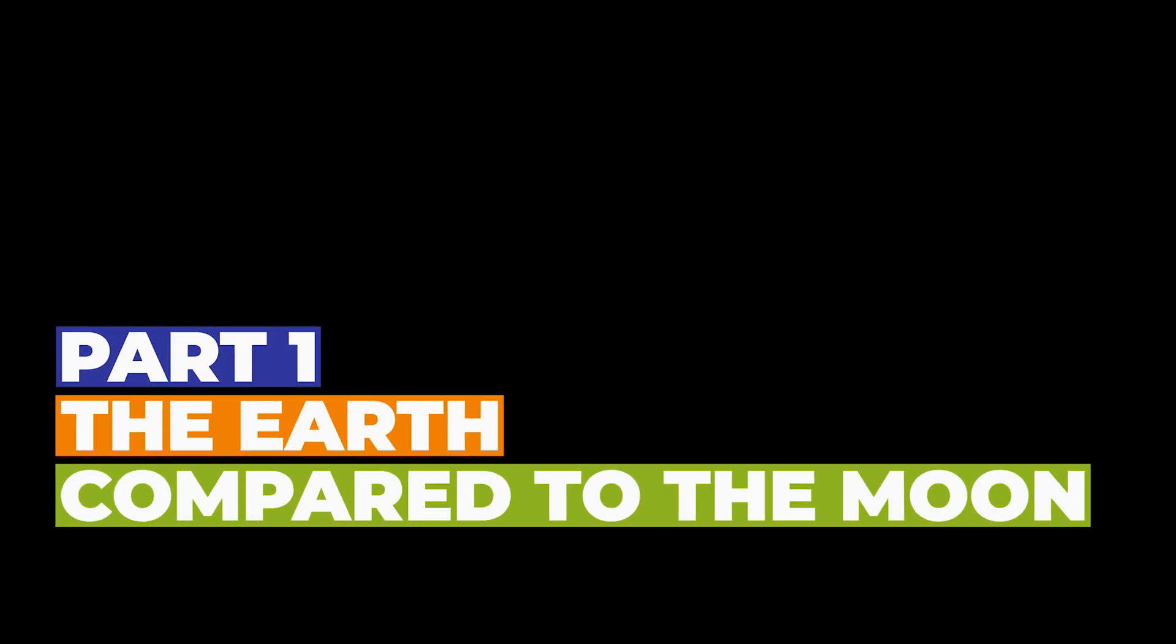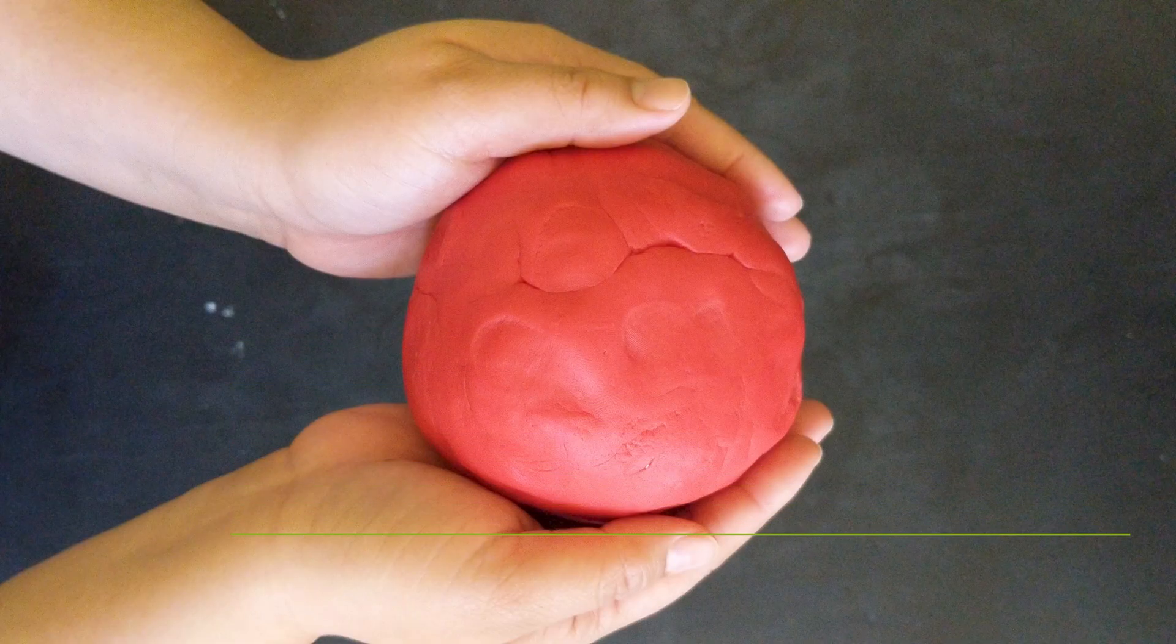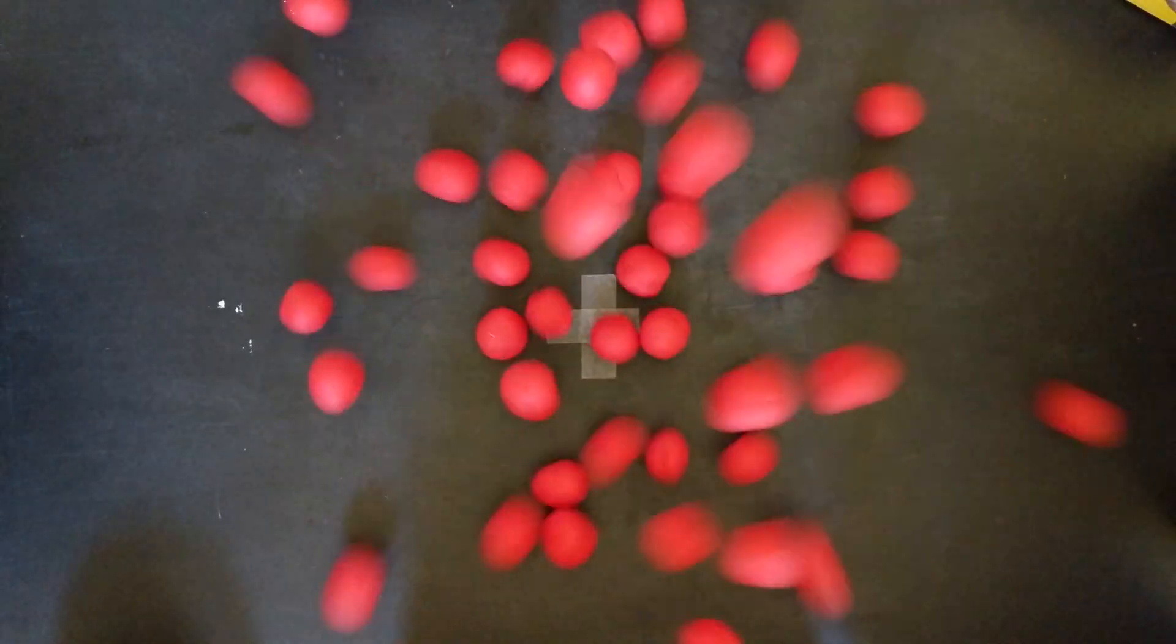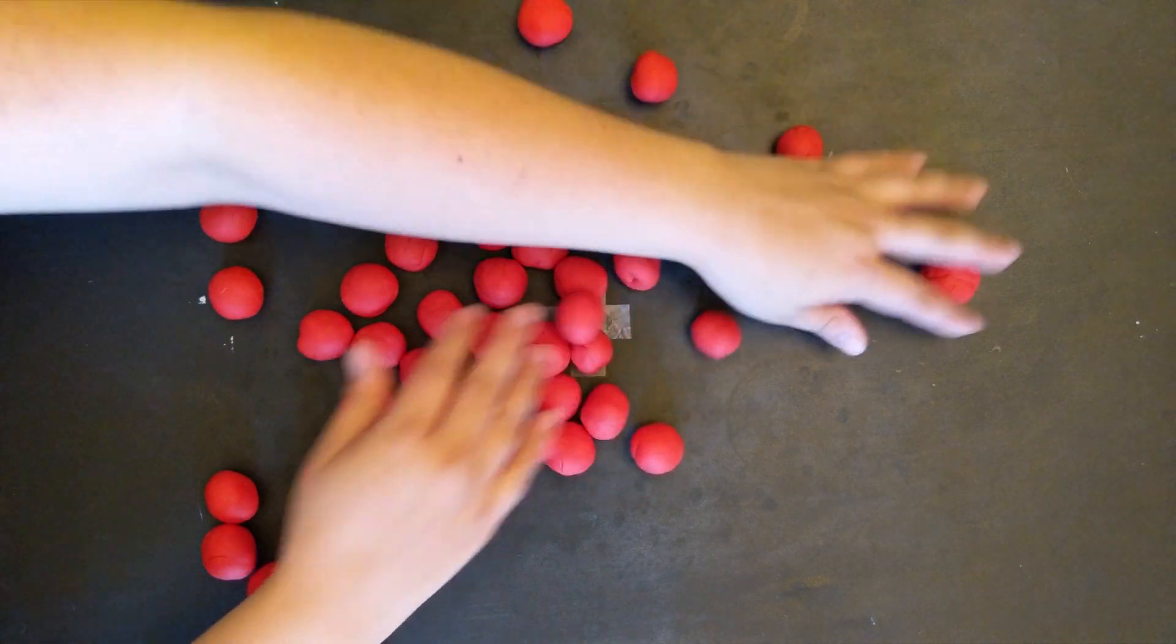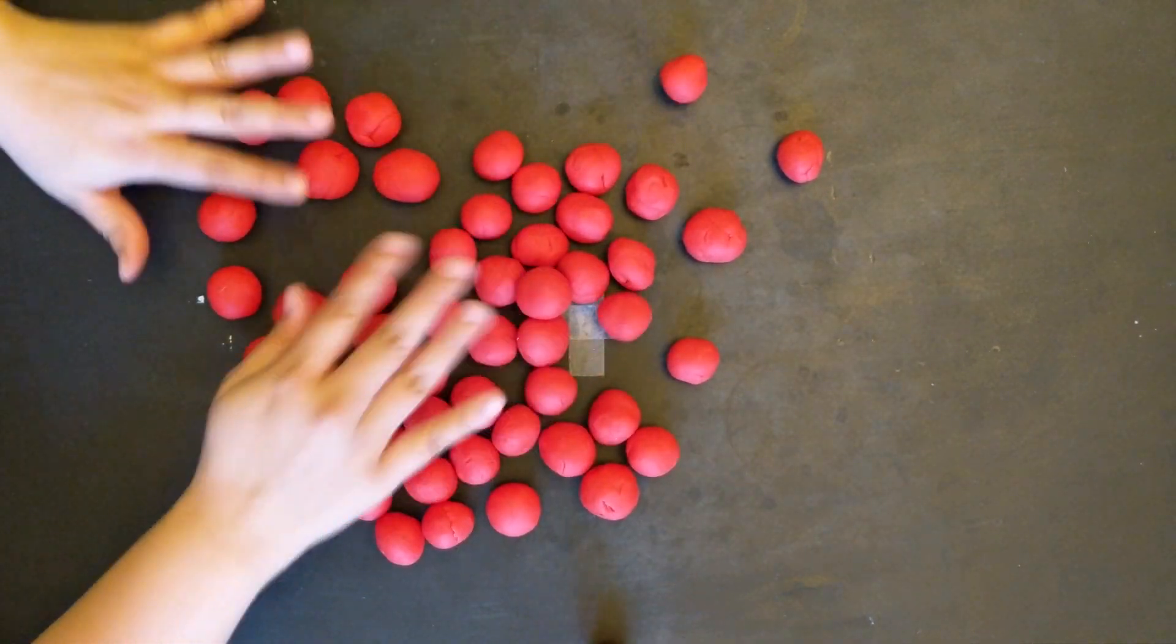Part one, the earth compared to the moon. We're going to take our Play-Doh and divide it into 50 equal spheres. Try to make them as equal as possible. It's okay if some of them are a little off, but try your best.